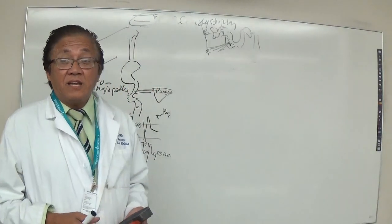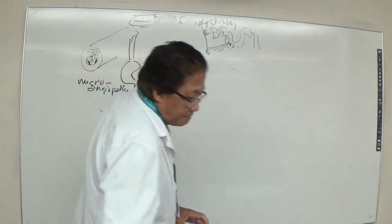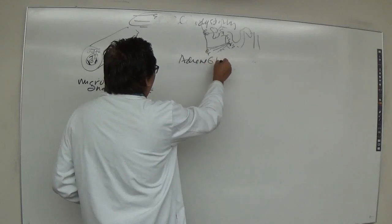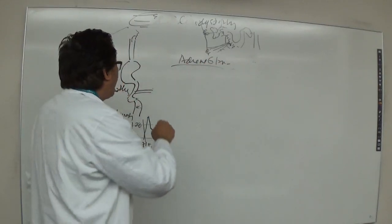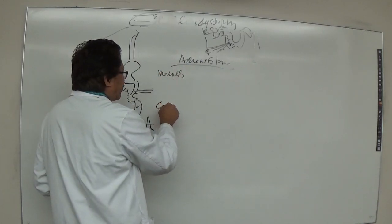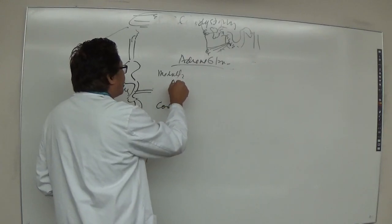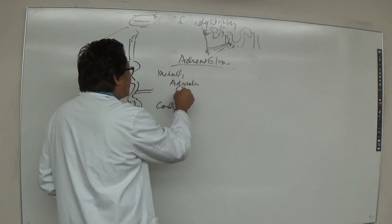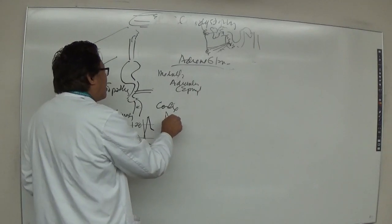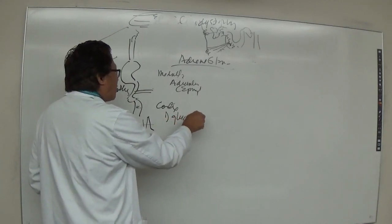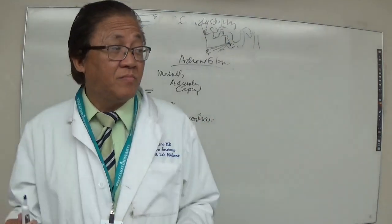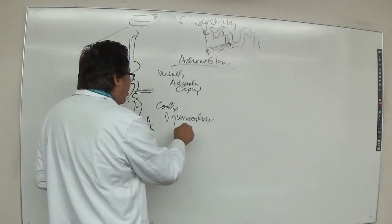The adrenal gland, also known as the suprarenal gland, is located above the kidney. It has two parts: the medulla, which produces adrenaline (epinephrine) and norepinephrine, and the cortex, which produces glucocorticoids such as cortisol, and mineralocorticoids such as aldosterone.